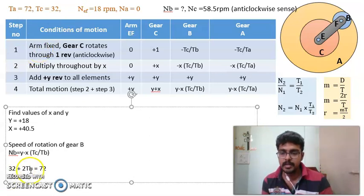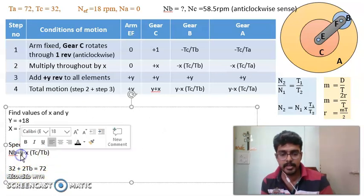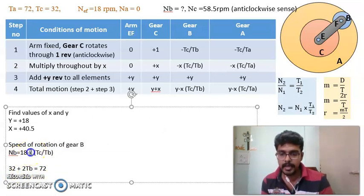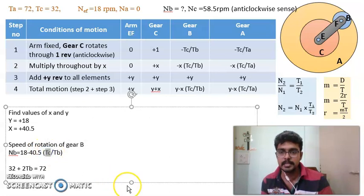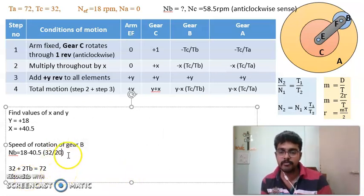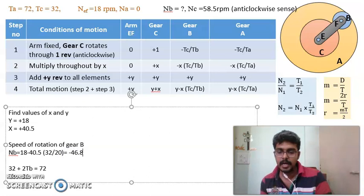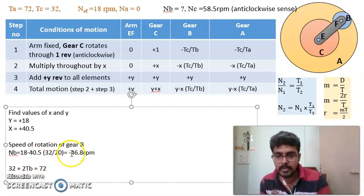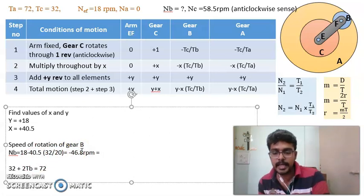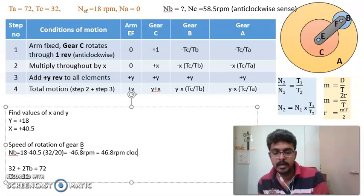Therefore, substituting into the equation for N_B: y minus x into Tc by Tb equals 18 minus 40.5 into 32 by 20. After solving, the answer is minus 46.8 rpm. Since it is negative, gear B is rotating in the clockwise sense — 46.8 rpm clockwise.